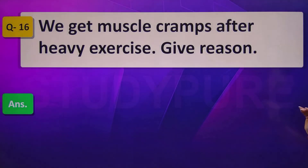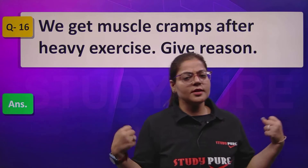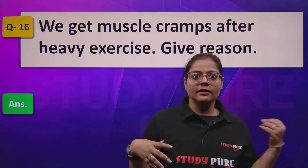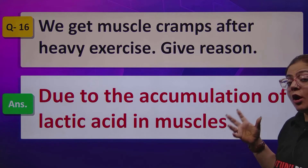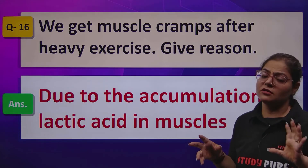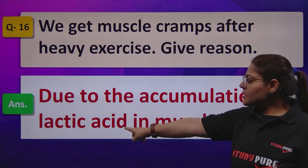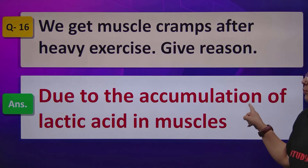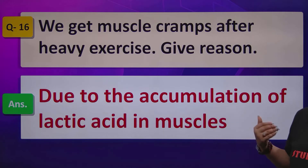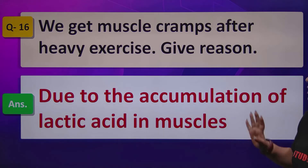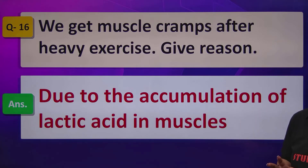We get muscle cramps after heavy exercise — give the reason. This is a common experience. Scientifically, when we do heavy exercise, a lot of oxygen is consumed. The aerobic respiration that was occurring in the presence of oxygen runs out of oxygen, and in that situation, anaerobic respiration takes over. Until we relax, drink water, and oxygen levels are restored, we feel pain in the muscles because anaerobic respiration produces a buildup of lactic acid.